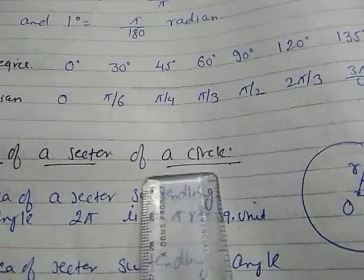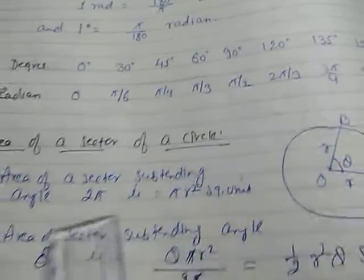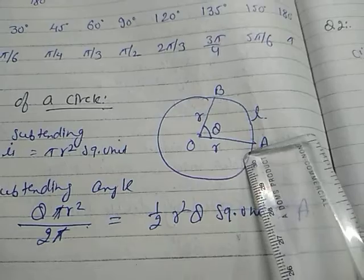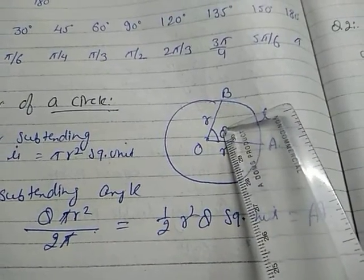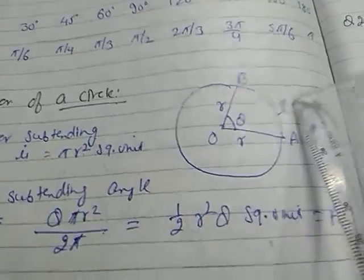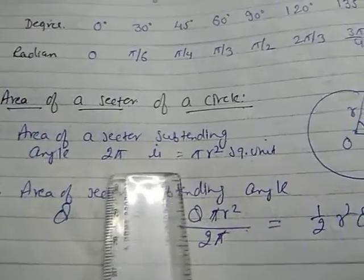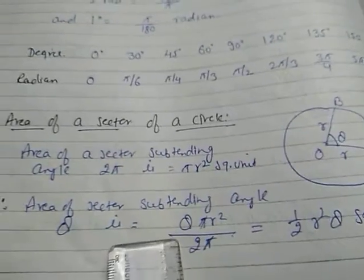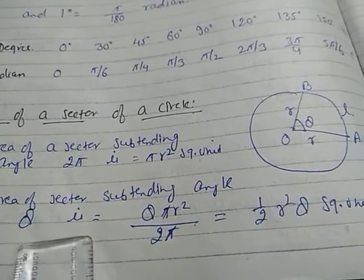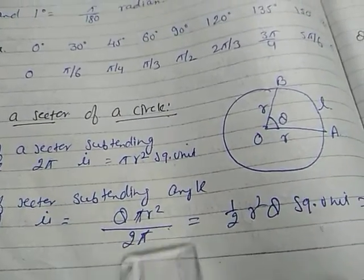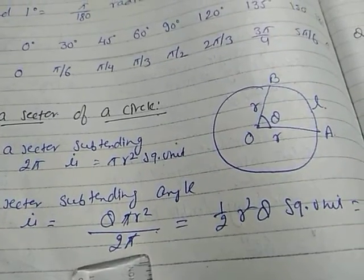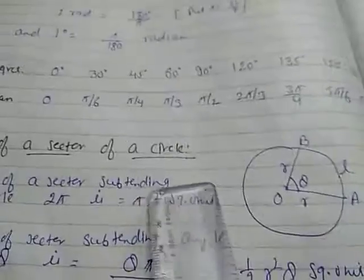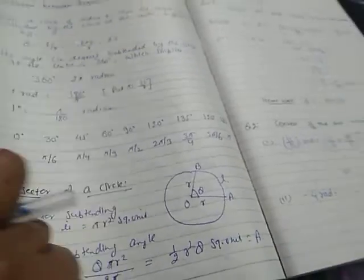Now, area of a sector of a circle. The angle subtending the arc is θ, radius is r, and length of arc is l, where θ = l/r. The area of a sector subtending angle 2π is πr². After simplification, the area of a sector = ½r²θ square units.